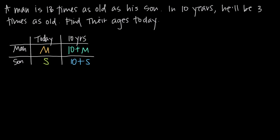With this in mind, we know the man is currently 13 times as old as his son. To write an equation representing the relationship between their ages today, the man's age m is equal to 13 times the son's age s. We have to multiply the son's age by 13 in order to equal the man's age, giving us our first equation: m = 13s.